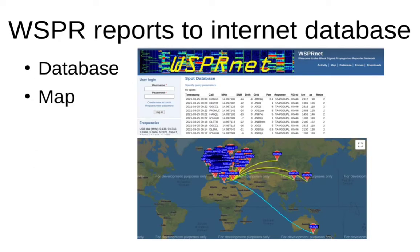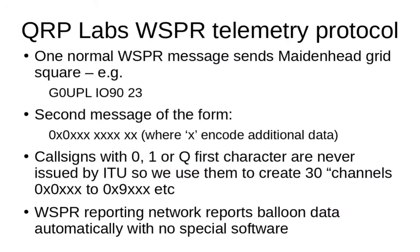The receiving stations decode and log the WSPR reports they receive to an internet database, so the transmitter station or anyone else can go to the WSPRnet website and look at the database showing who has been receiving your signal or whose signal you are receiving. There's a map which shows who has been receiving your signal. This example map shows some transmissions I made on 20 meters and the stations that were receiving me.